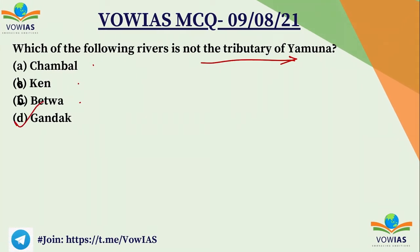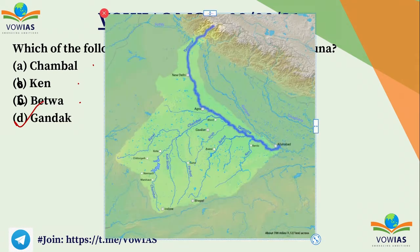Now we will see the map of Yamuna. The Yamuna river starts somewhere in Uttarakhand near the glacier of Yamunotri. It flows through all the valleys and finally meets Ganga at Allahabad.